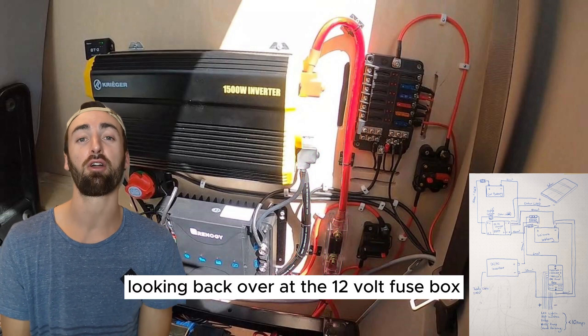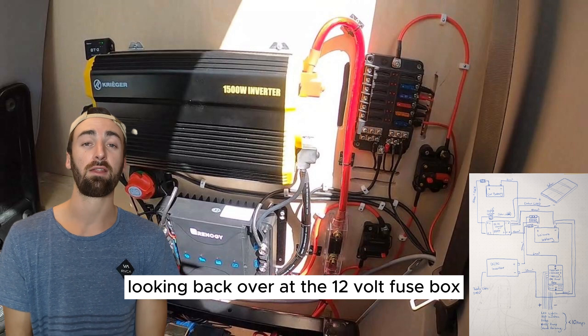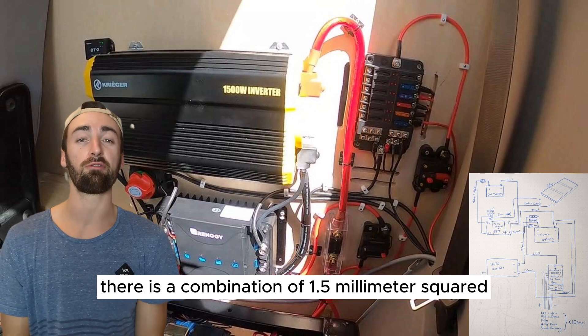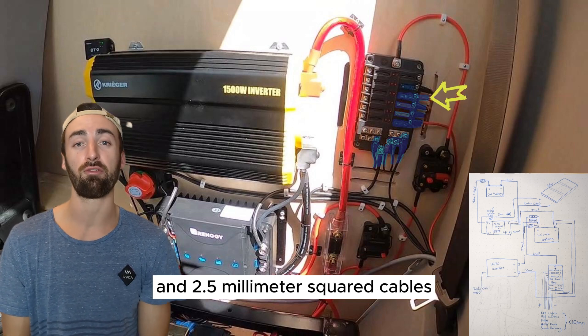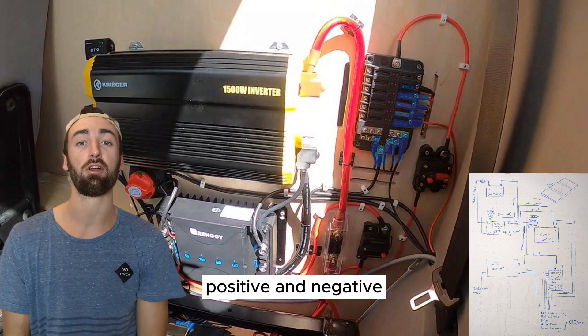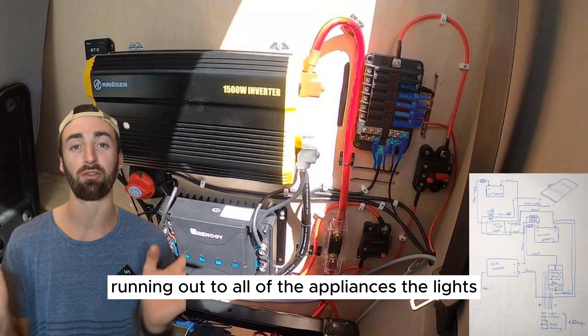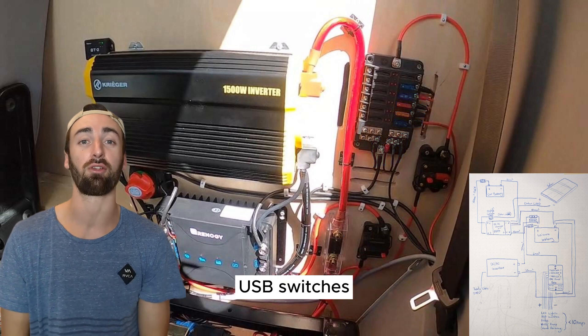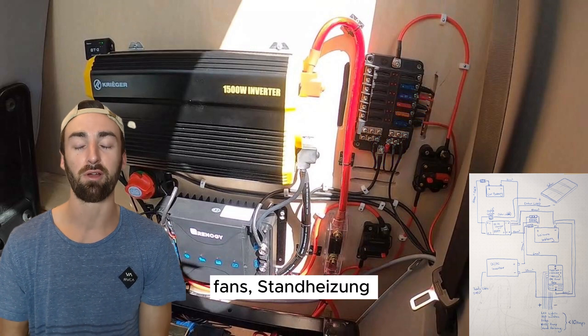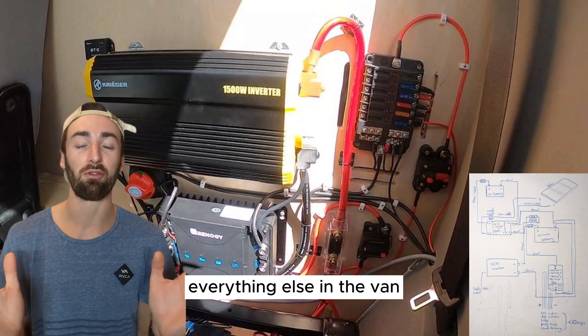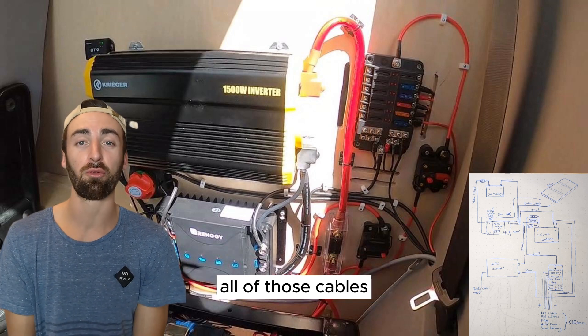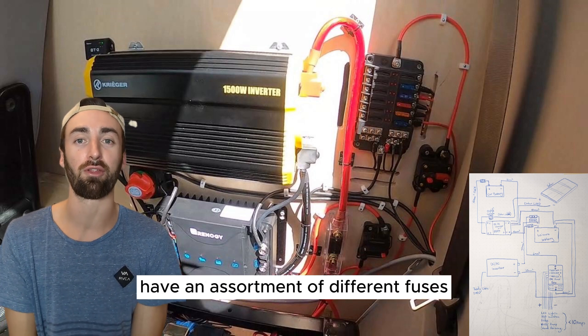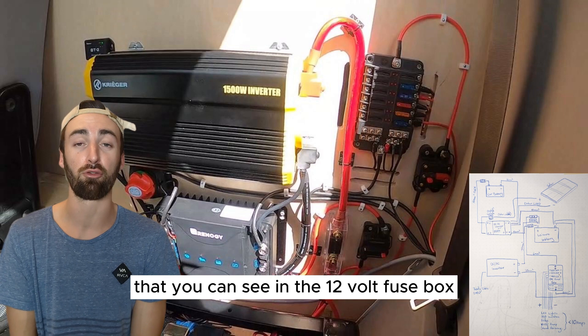And finally looking back over at the 12 volt fuse box there is a combination of 1.5 millimeter squared and 2.5 millimeter squared cables positive and negative running out to all of the appliances, the lights, USB switches, fans, diesel heater, standing heater, everything else in the van. All of those cables have an assortment of different fuses that you can see in the 12 volt fuse box.